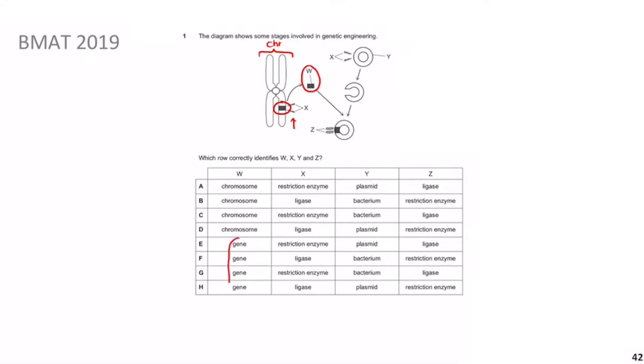The 'zappers' used to extract the gene from the chromosome are called restriction enzymes — technically restriction endonucleases, but at GCSE level, restriction enzymes is fine. So X is restriction enzymes. That narrows us down to either answer E or G.